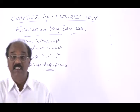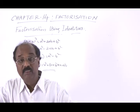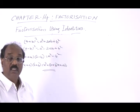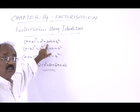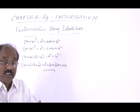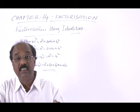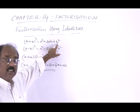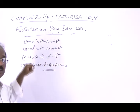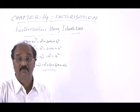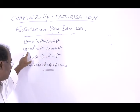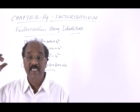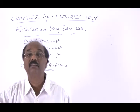We can make use of these identities to factorize. What we do is compare the given expression with these identities. If it is found to be in the form given on the right side, then we can immediately write that expression in the corresponding left side form. If the expression takes the form a² + 2ab + b², it can be written as (a + b)², and the factors are (a + b) and (a + b). Similarly for the other identities. That is the method.